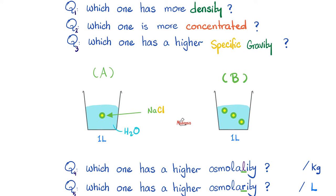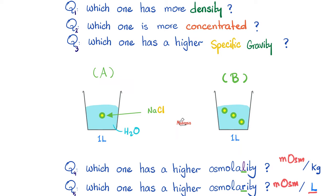Here are five questions for you. Which one of these two is more dense — is it A or B? Knowing that the first cup has one molecule of sodium chloride, the second one has three molecules, but both have the same volume. Which one is more dense? Which one is more concentrated? Which one has a higher specific gravity? Which one has a higher osmolality with the L, which is the number of osmoles or milliosmoles per kilogram? And which one has the higher osmolarity, which is per liter? Please pause and think about it.